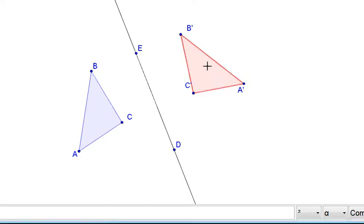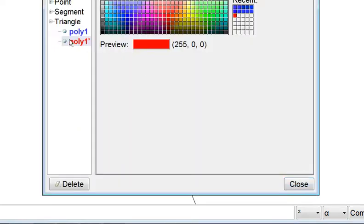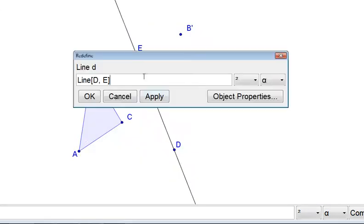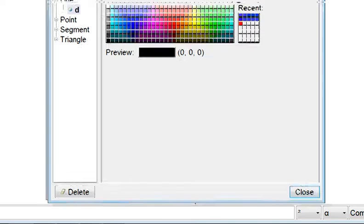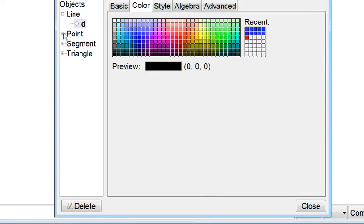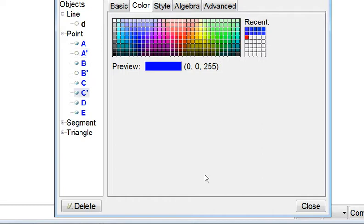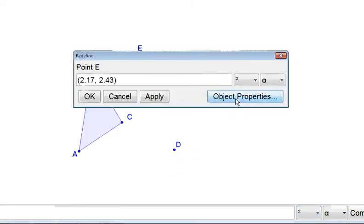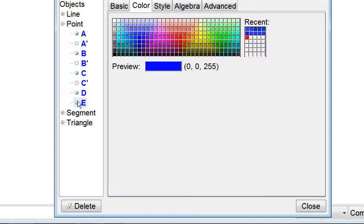Which means we're going to go ahead and hide this one. We can also hide our line. There we go. Okay. And let's hide point E. We don't need it anymore.